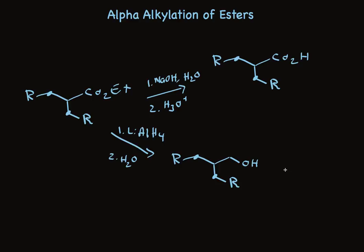So the take-home message is alpha-alkylation of ethyl acetate and other esters is really useful in organic synthesis. Using LDA followed by an alkylating agent, like a primary alkyl bromide, is one very good way to accomplish the alkylation. There's another good way. It's called the malonic ester synthesis, and I'll talk about that in another video.